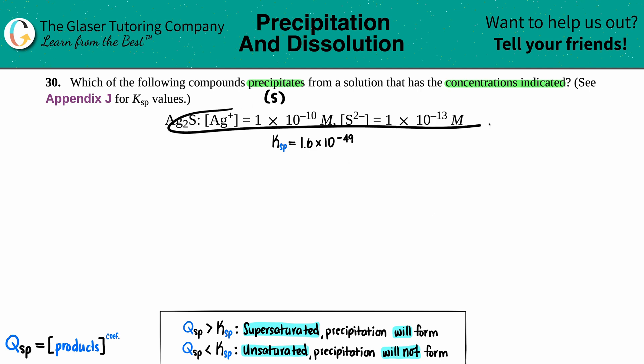In order to do that, we always have to compare where we're at by finding a Qsp to the known Ksp at equilibrium. From there we can see if we're supersaturated or unsaturated and whether a precipitate will form.